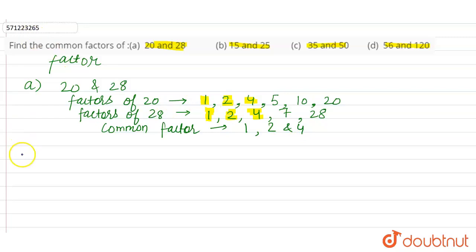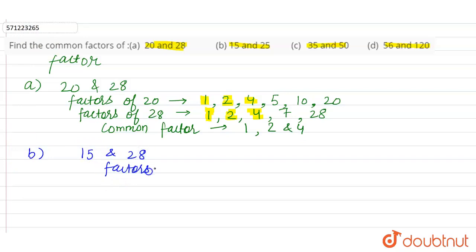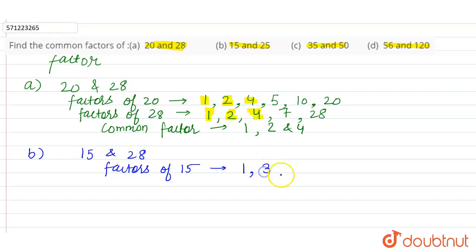In part (b), we have to find the common factors of 15 and 25. Factors of 15: 1 × 15 = 15, so 1 is a factor. 2 × 7.5 is not a whole number, so 2 is not a factor. 3 × 5 = 15, so 3 and 5 are factors. Then 15 itself.